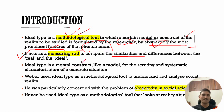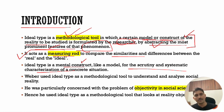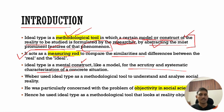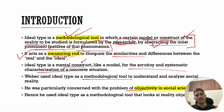We can say that an ideal type is a mental construct, because the researcher creates it in the mind — it does not exist in reality — like a model for the scrutiny and systematic characterization of a concrete situation. Max Weber believed that any social reality is very complex. To simplify it, to analyze it, you take it to its pure form, its ideal form, and then you observe whatever deviations occur from it.